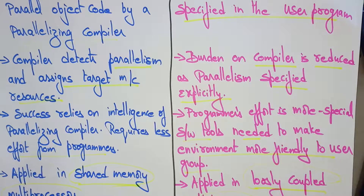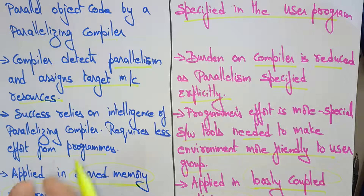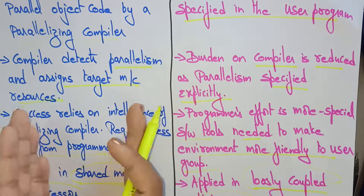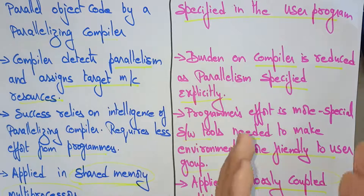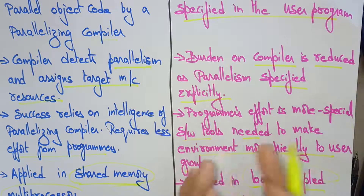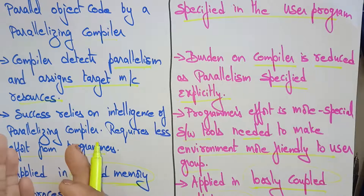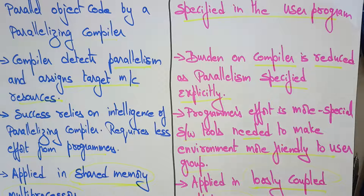So this is the main difference between implicit and explicit parallelism. Which one is better? It depends on the programming environment — each one has its own capabilities. In implicit parallelism we are reducing the programmer's burden, and in explicit parallelism we are reducing the compiler's burden. Based on the programming environment, the programmer can select either implicit or explicit parallelism. Thank you.